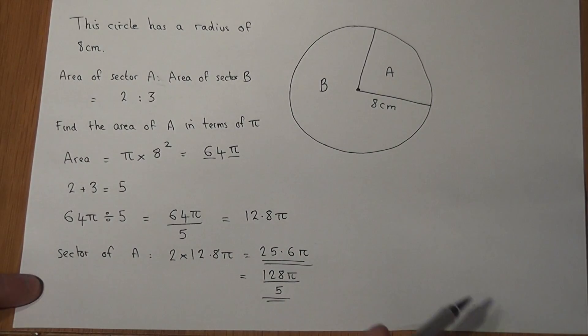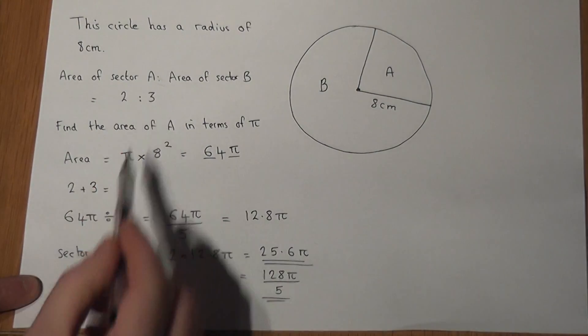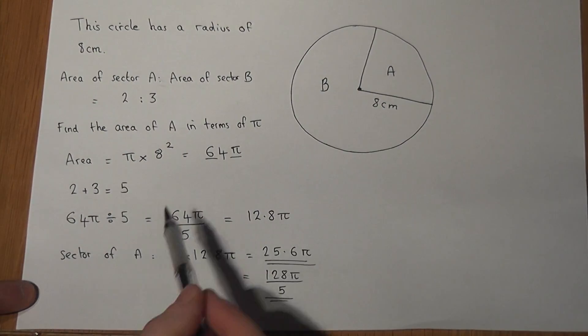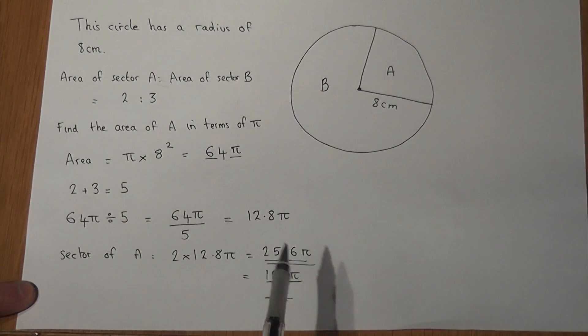So in summary, I do the entire area first. I add the parts up to get 5. I divide by 5 and because A was worth two parts I times my answer by 2.